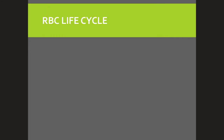The red blood cell life cycle: the red blood cell lives about 120 days. It cannot synthesize new components — why? Because it doesn't have a nucleus. Ruptured red blood cells are removed from circulation and destroyed by fixed phagocytic macrophages in both the spleen and liver.